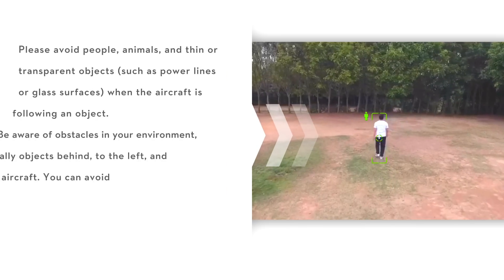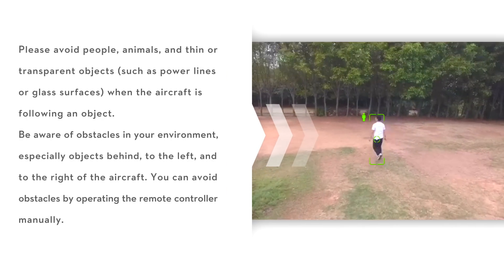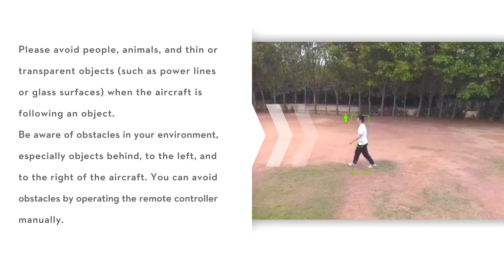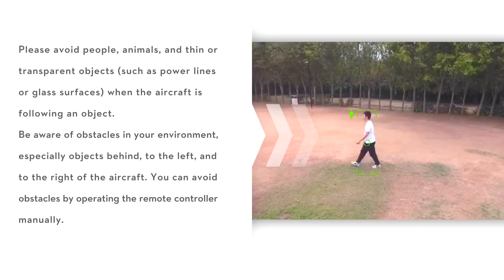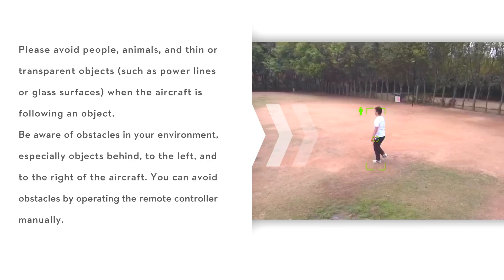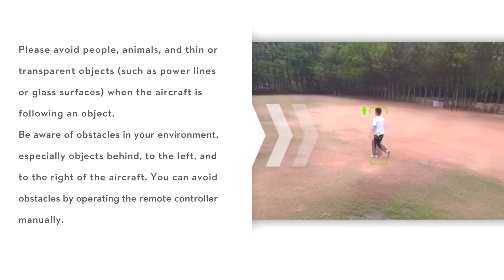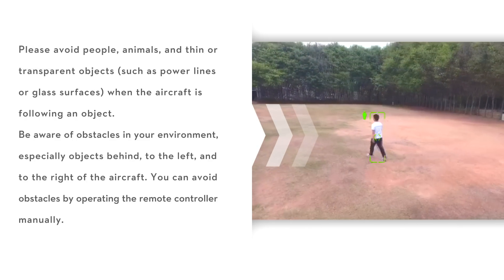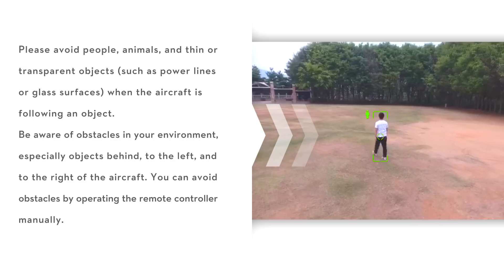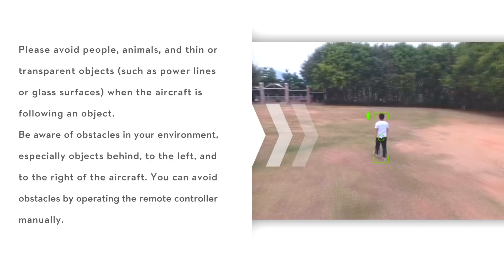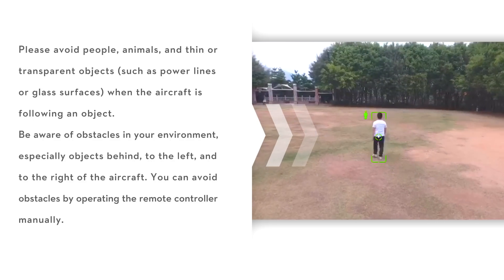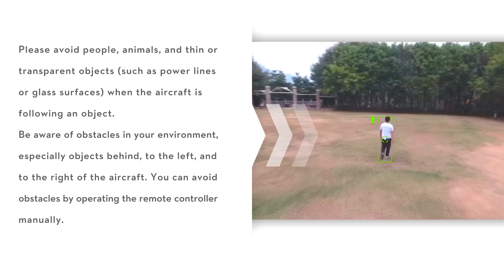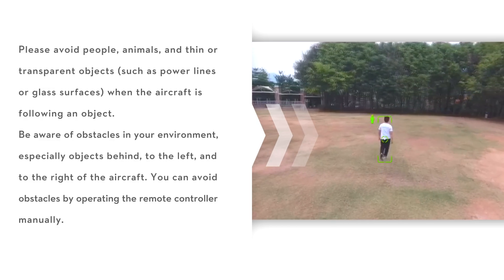Please avoid people, animals, and thin or transparent objects such as power lines or glass surfaces when the aircraft is following an object. Be aware of obstacles in your environment, especially objects behind, to the left, and to the right of the aircraft. You can avoid obstacles by operating the remote control manually.